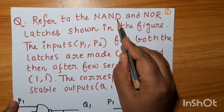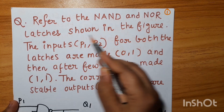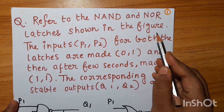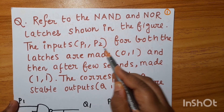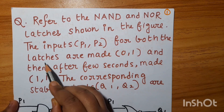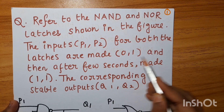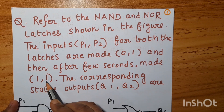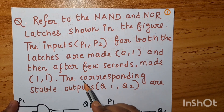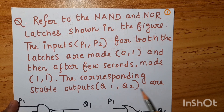Refer to the NAND and NOR latches shown in the figure. The inputs P1 and P2 for both the latches are made 0,1 and then after few seconds made 1,1. The corresponding stable outputs Q1 and Q2 are to be determined.